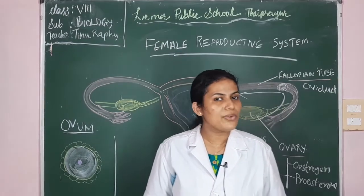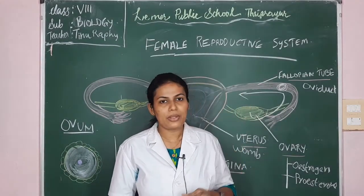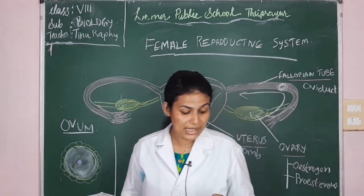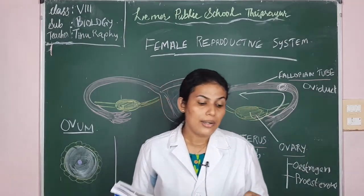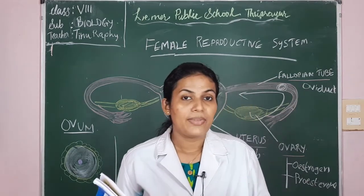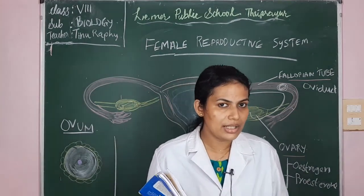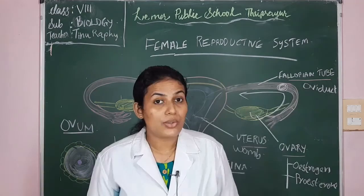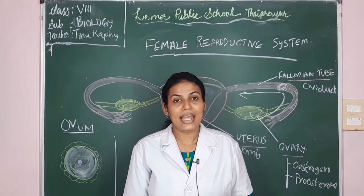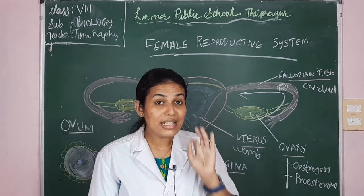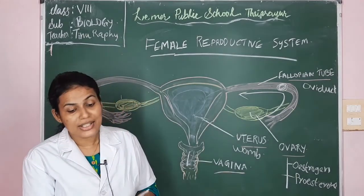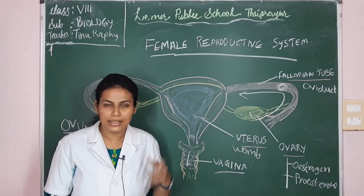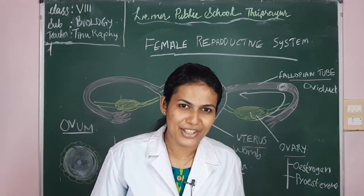I hope all of you understood well about the female reproductive system. Before concluding, the teacher would like to give you a small homework: in page number 100, there are two multiple choice questions — kindly do those as homework. Kindly go through pages 99 and 100 and read the textbook at least twice. Then you will understand well about the female and male reproductive parts. See you in next class. Thank you.